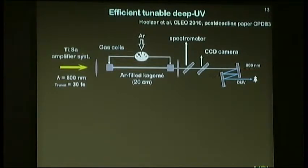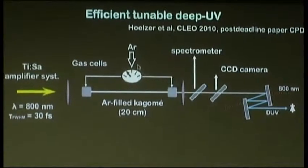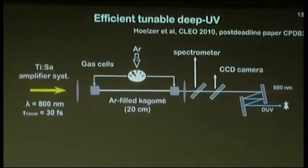We take standard pulses from a Ti:sapphire amplified oscillator, 800 nanometers, 30 femtosecond duration. Energy is in the one microjoule range, so not huge amounts of energy. The fiber itself is only 20 centimeters long. This Kagome structure is filled with gas in a simple way with gas cells connected to an argon regulator.